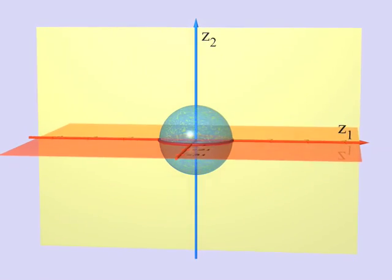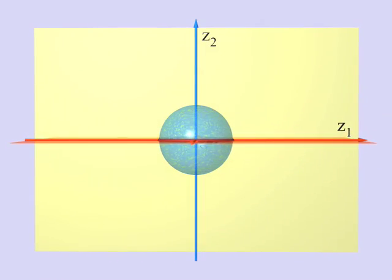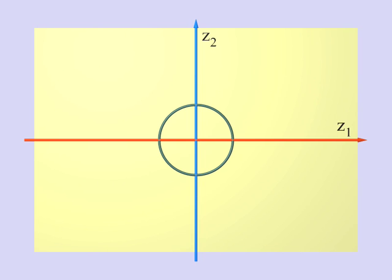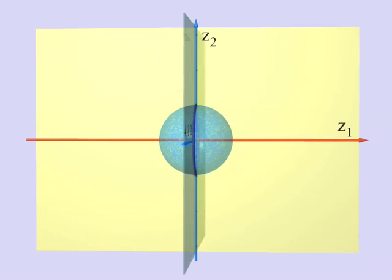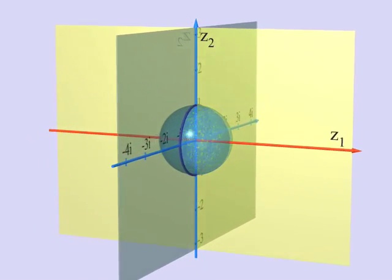You see, the three-sphere intersects the first axis in a circle.